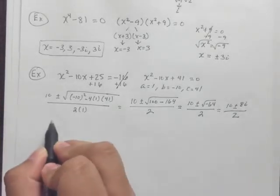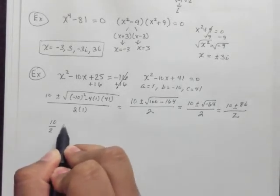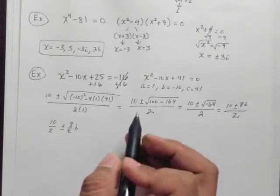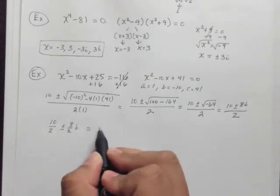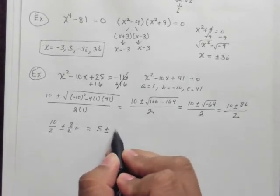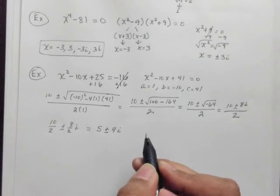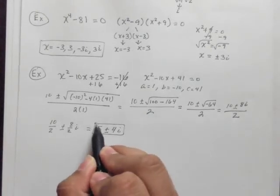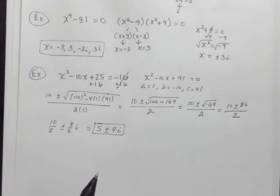10 divided by 2 is 5. So, well, let's actually write it out separate. 10 over 2 plus and minus 8 over 2i. And now we can simplify it. 10 over 2 is 5 plus and minus and 8 over 2 is 4i. So here it is 5 plus and minus 4i, a solution to this quadratic. And the solutions are both complex.